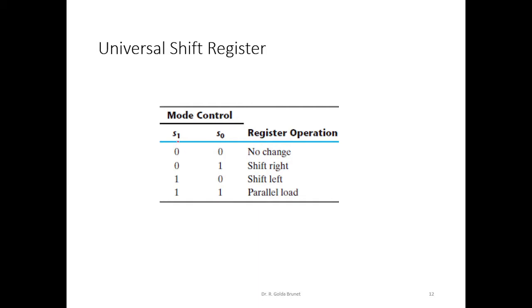When S1 and S0 are both 0, we retain the content of the shift register. If S1 is 0 and S0 is 1, we perform shift-right. When S1 is 1 and S0 is 0, we perform left shift. Finally, when S1 is 1 and S0 is 1, we perform parallel load.